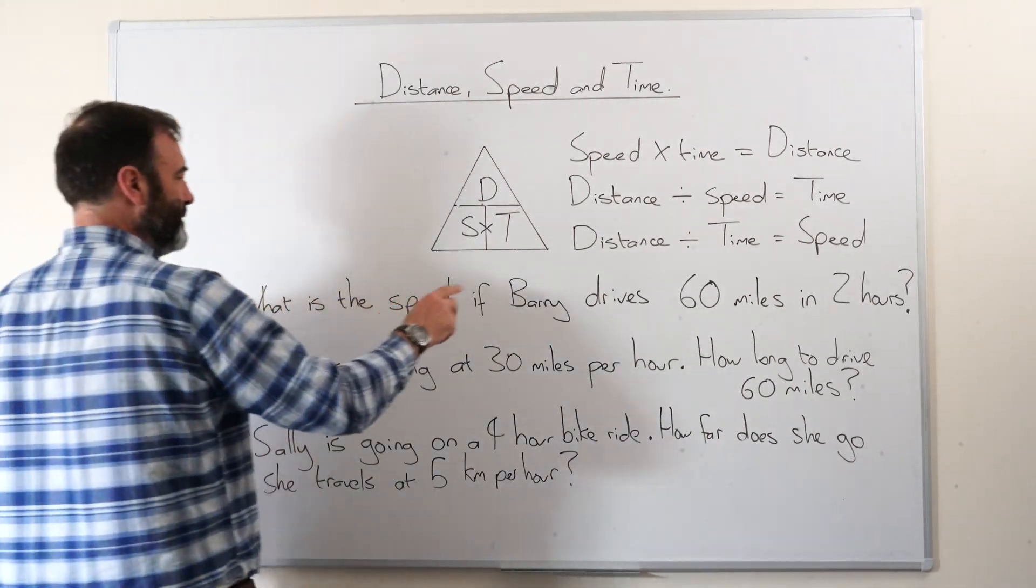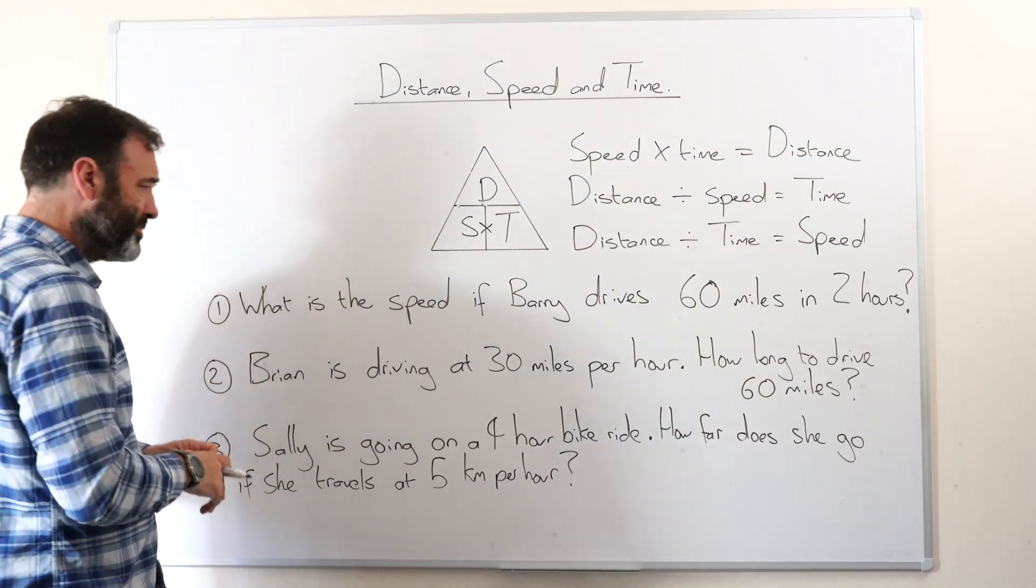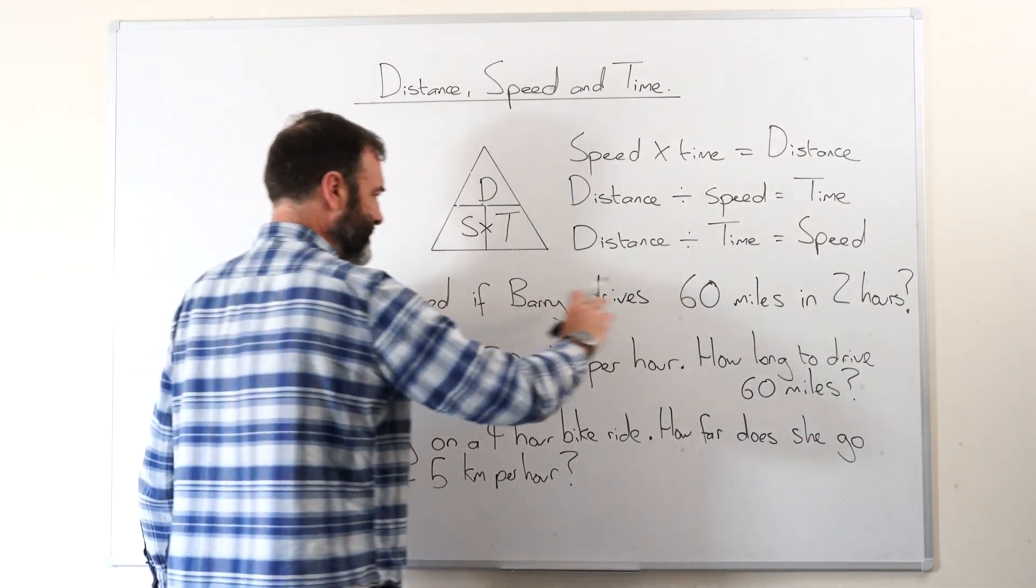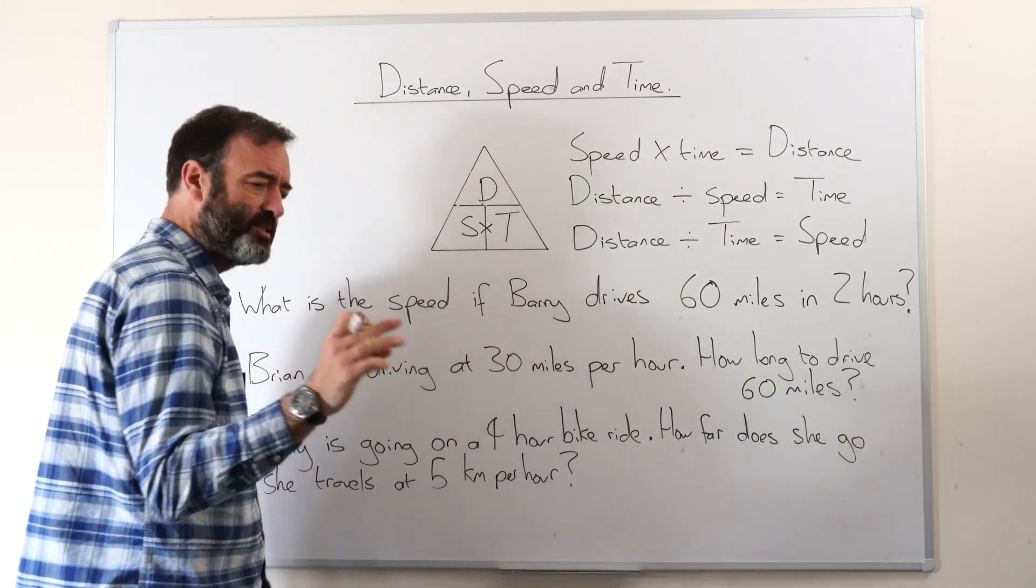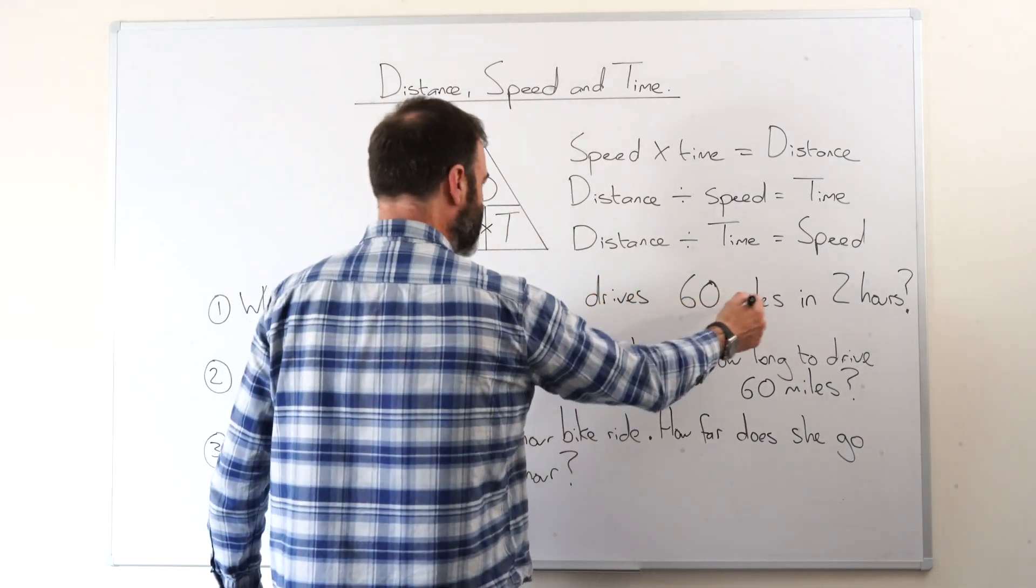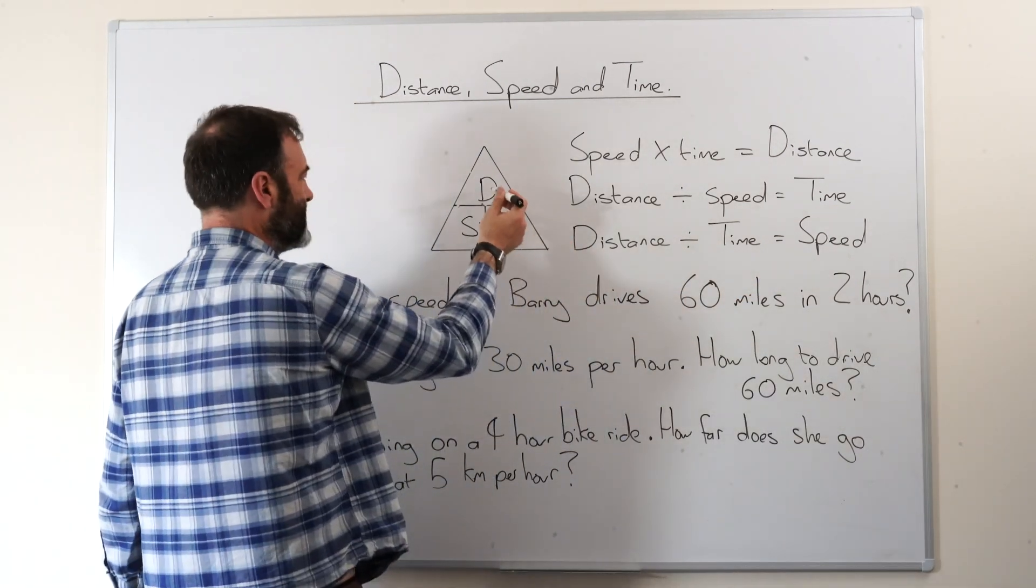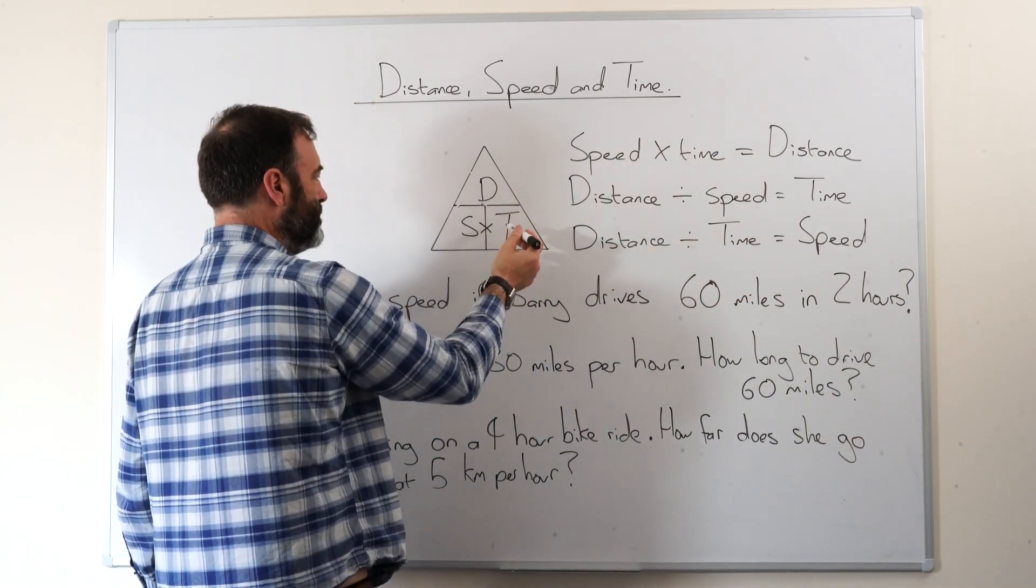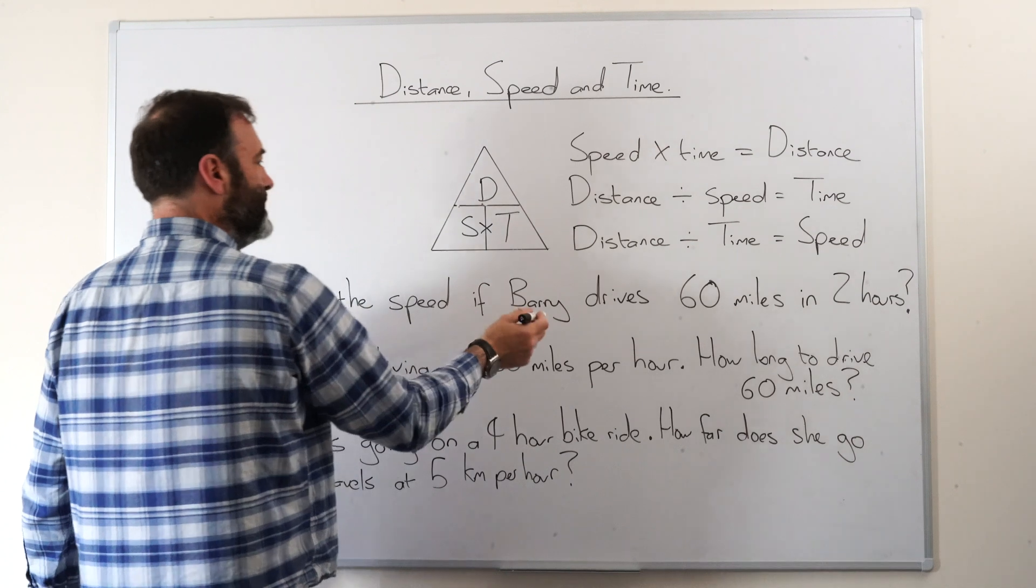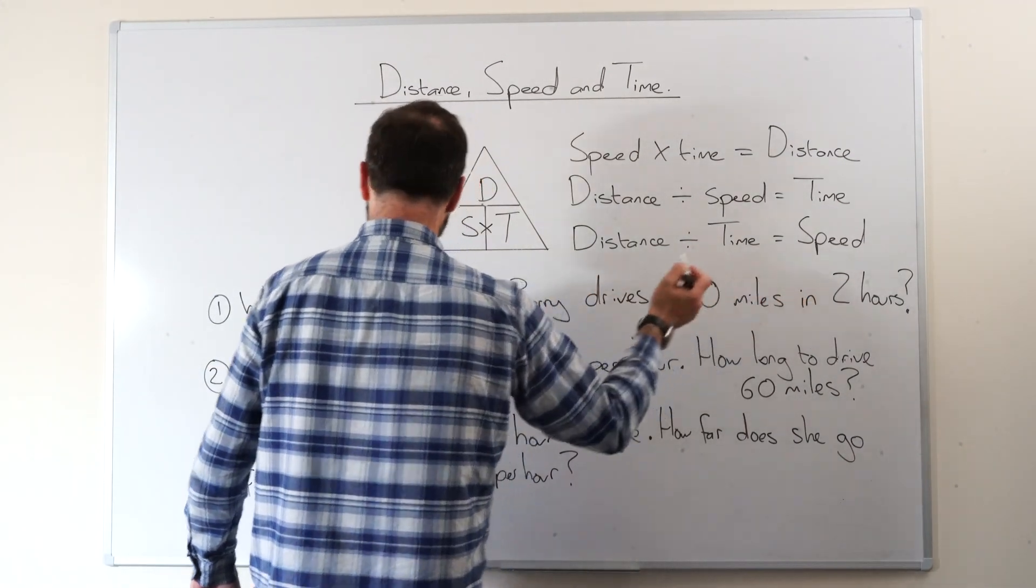Number one, what is the speed if Barry drives 60 miles in two hours? So the main thing for a kid in the exam is to look at a word equation and be able to identify the sum that needs to be done. So here we've got the distance and we've got the time. So we know that it's distance over time to give us speed. So we do 60 divided by 2 is 30.